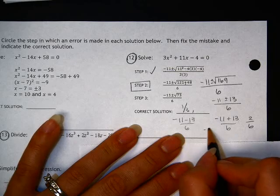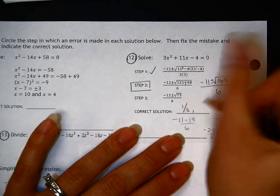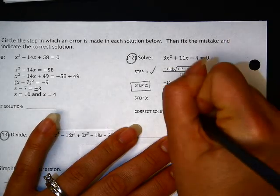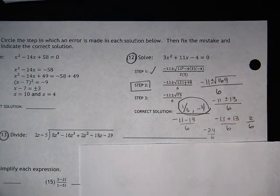And this is negative 24 over 6, which is negative 4. So that is what the answer should be.